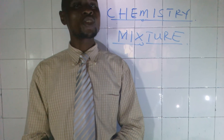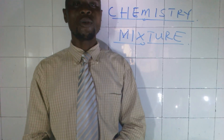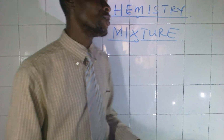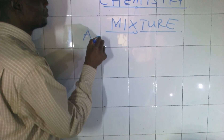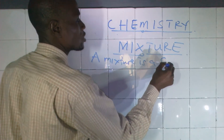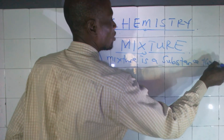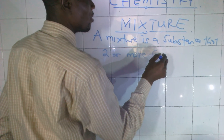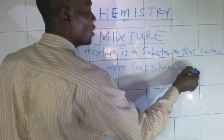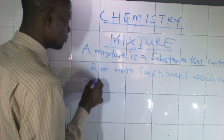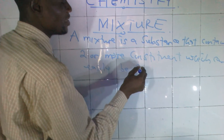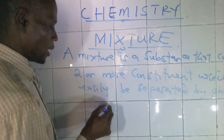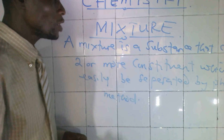So what is a mixture? A mixture is a substance that contains two or more constituents, which can easily be separated by physical method. Let's put it on the board — a mixture is a substance which contains two or more constituents, which can easily be separated by physical method.